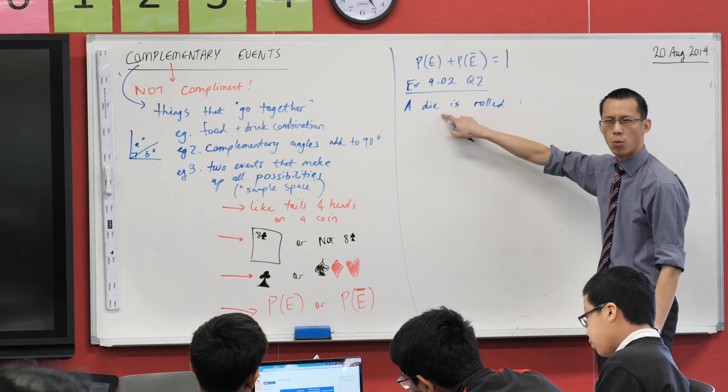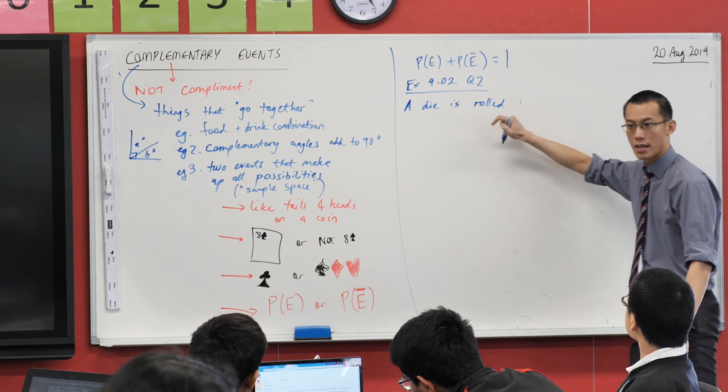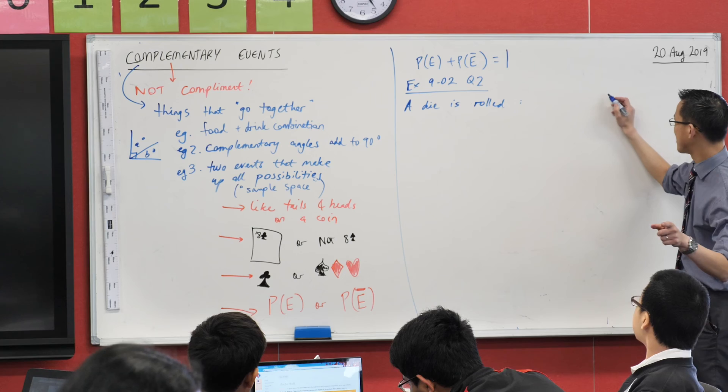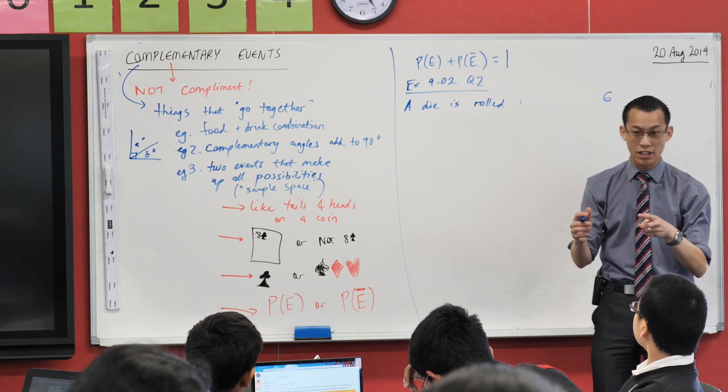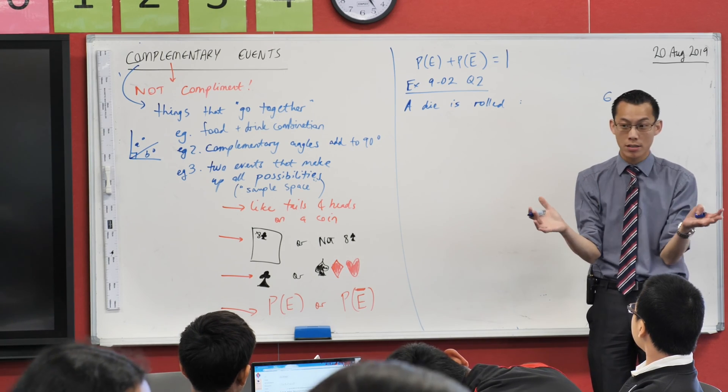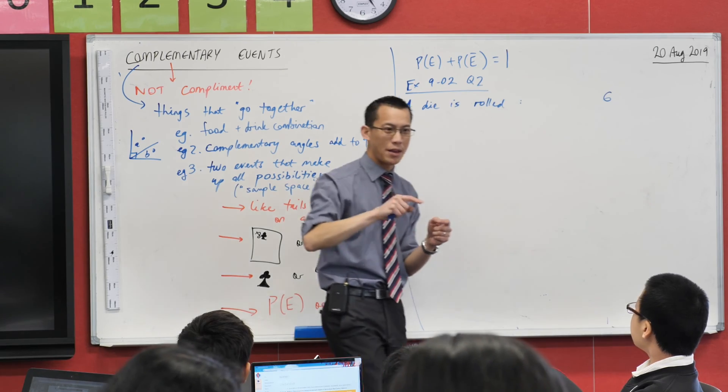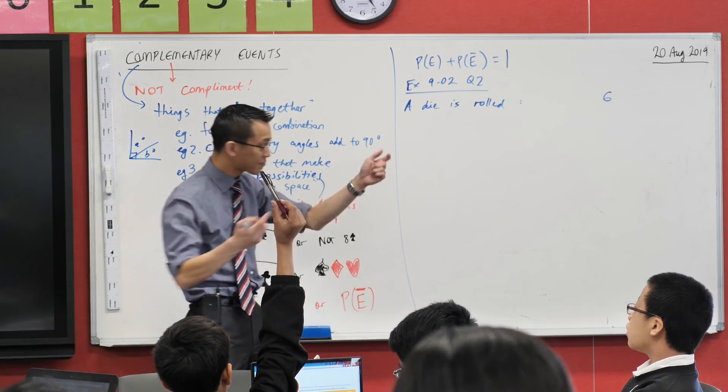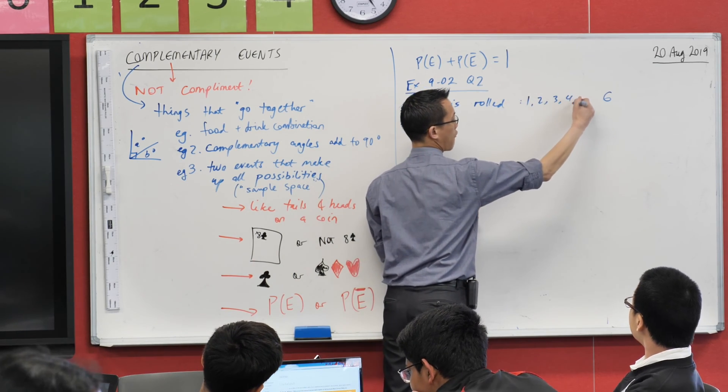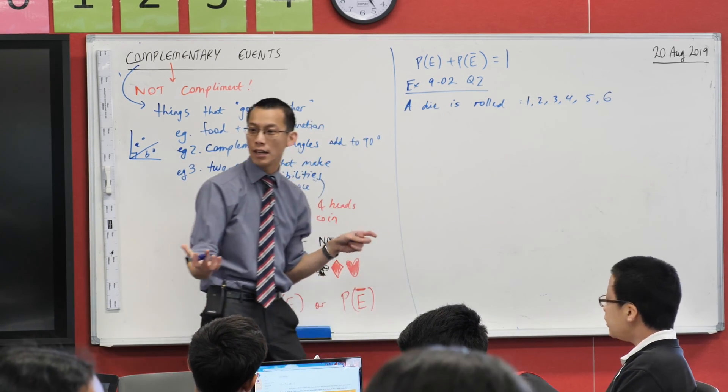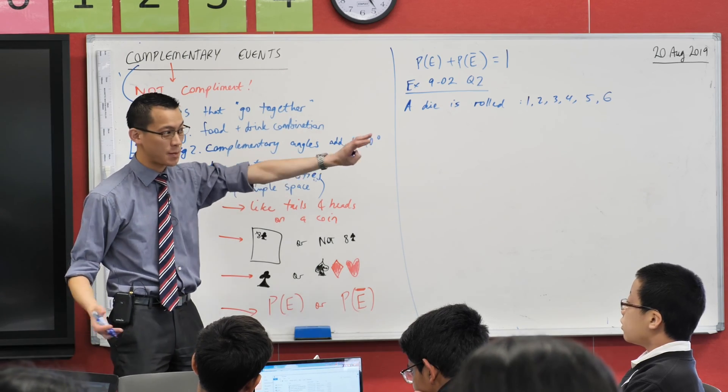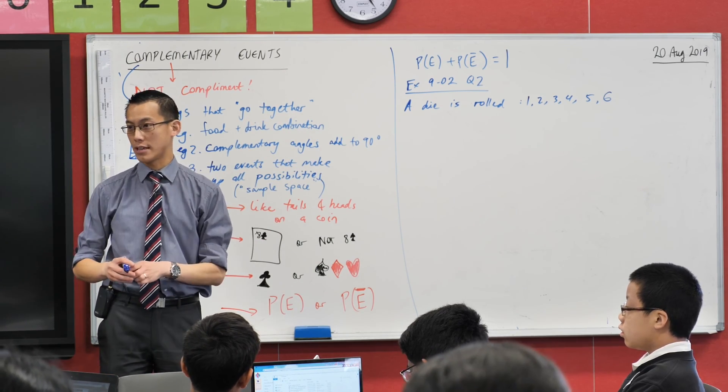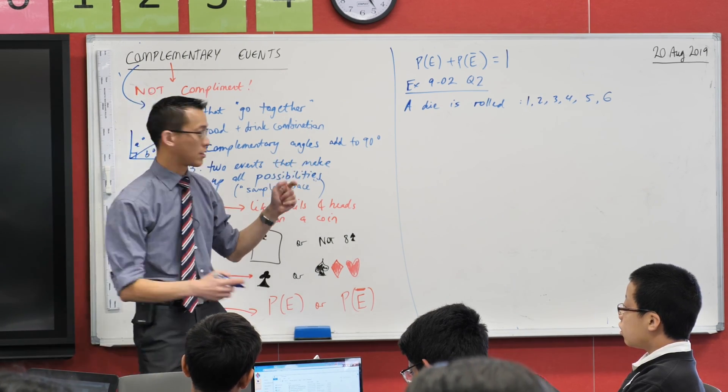On a standard die, what's the sample space? Six. Okay. Now I heard the number six. I think what you're telling me is how many things there are possible, right? But that doesn't actually tell me what those events are. Krishan, what would you like to add to that? One, two, three, four, five, and six. And of course that means the size of the sample space is six, but these are the actual things that can happen and I need them to answer the questions.